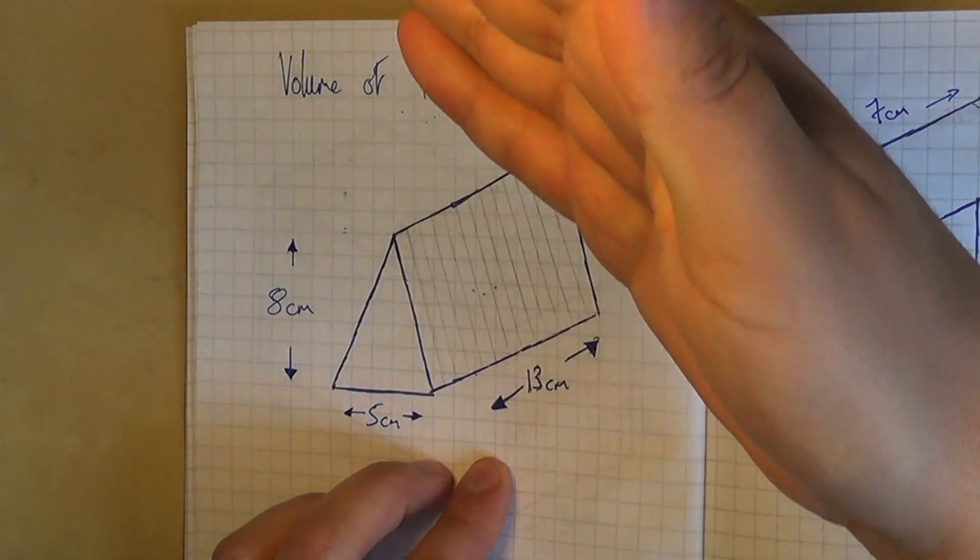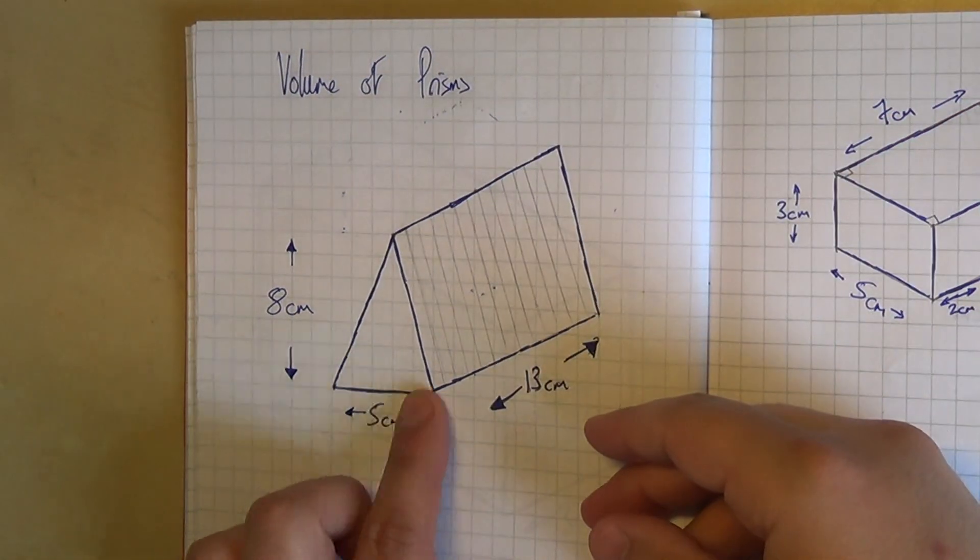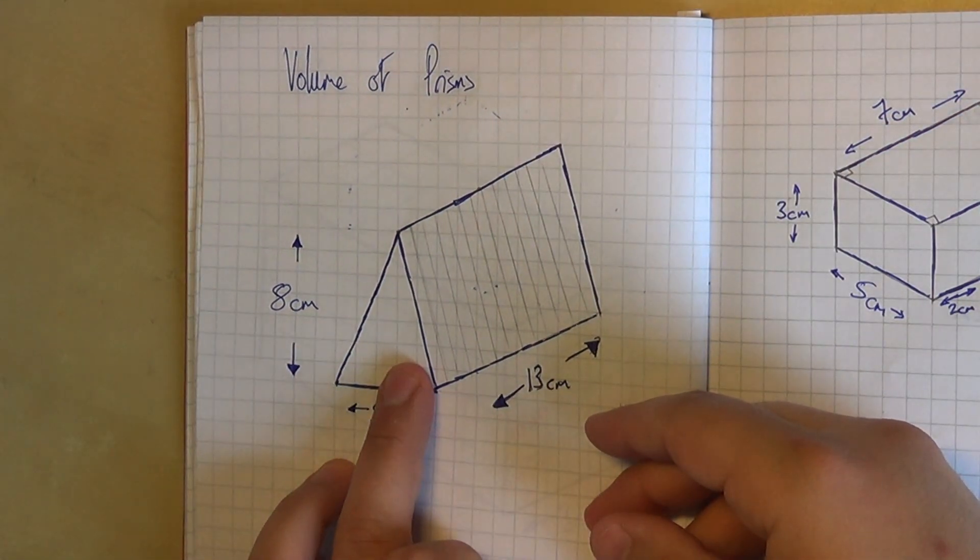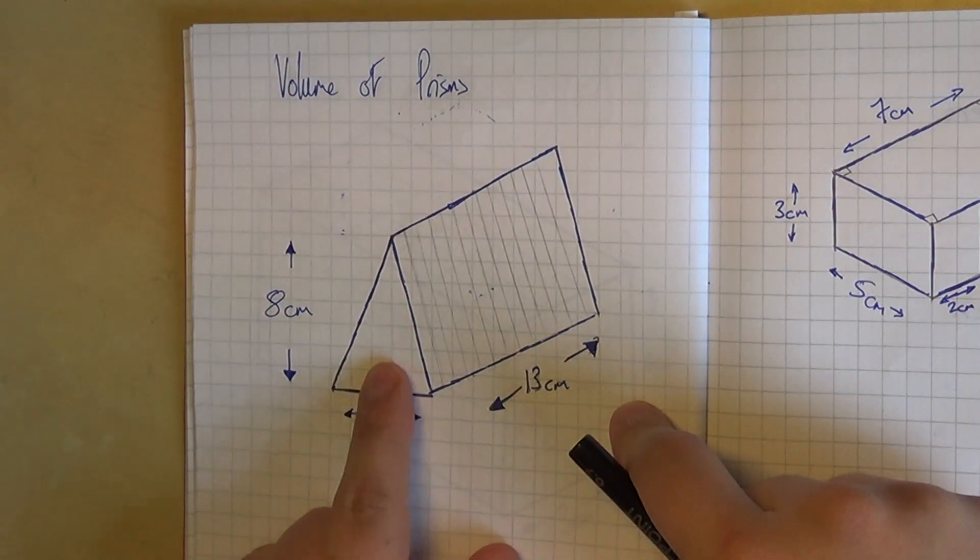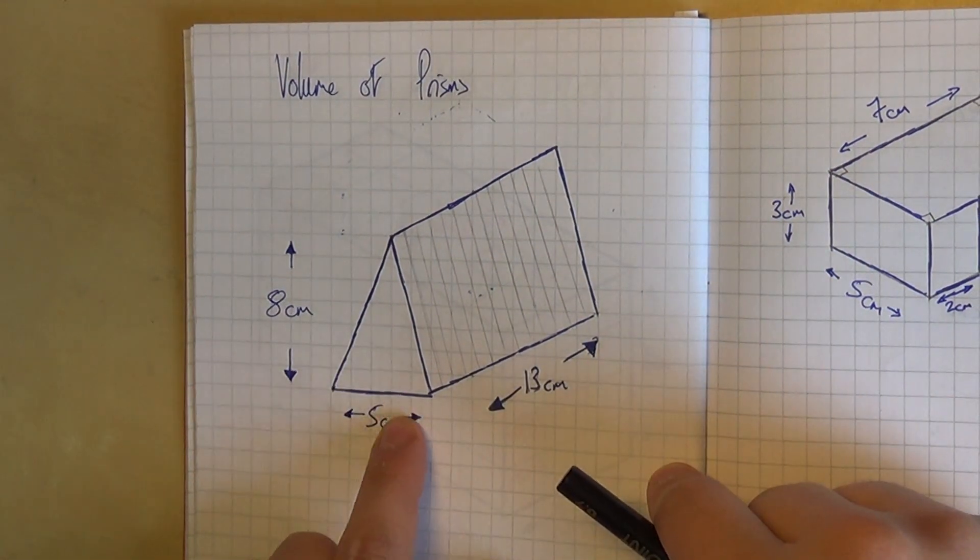Now this shape on the end, because if you slice across it in any way, it's the same shape all the way, it's called a cross section. And in this case this cross section is a triangle, so this prism is called a triangular prism.